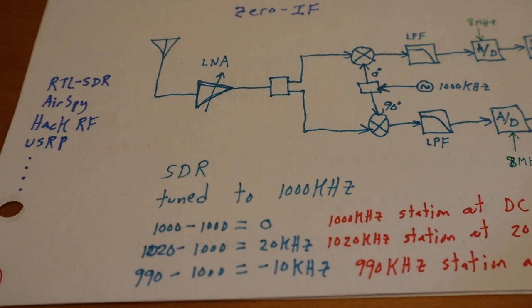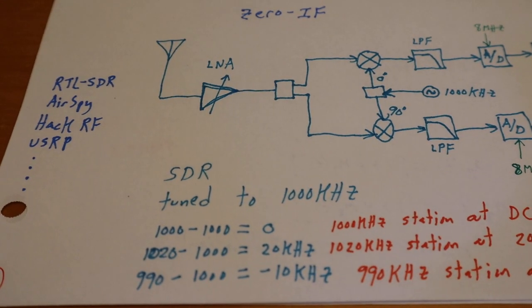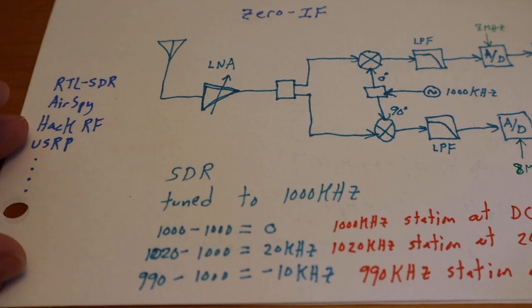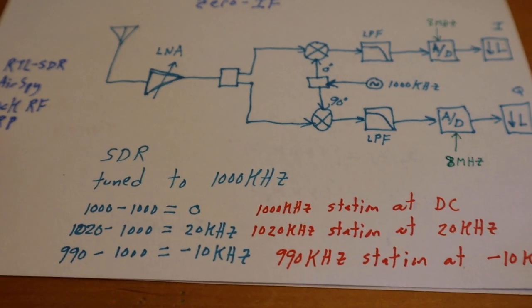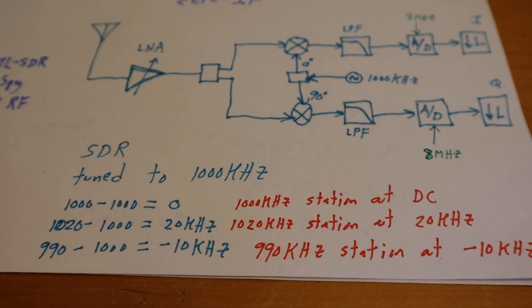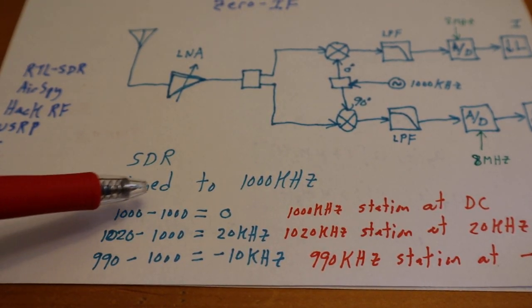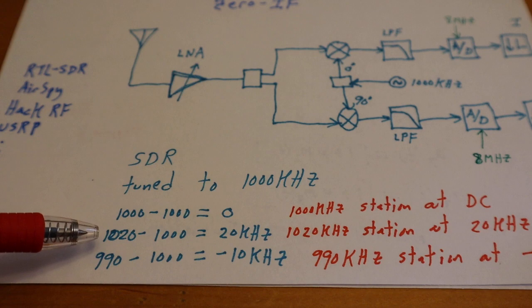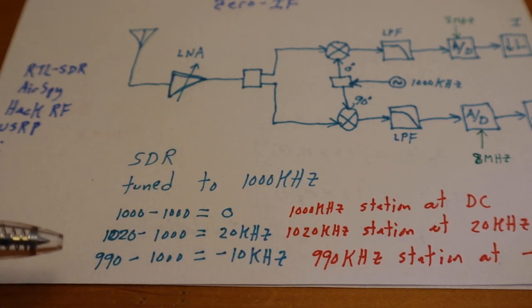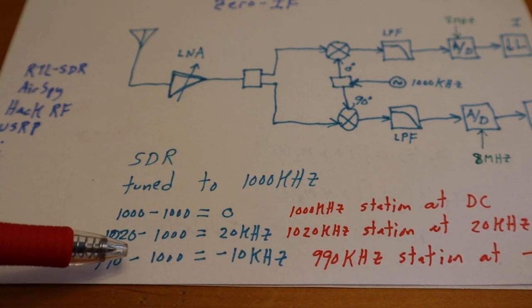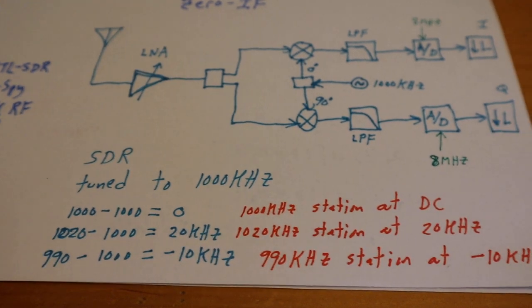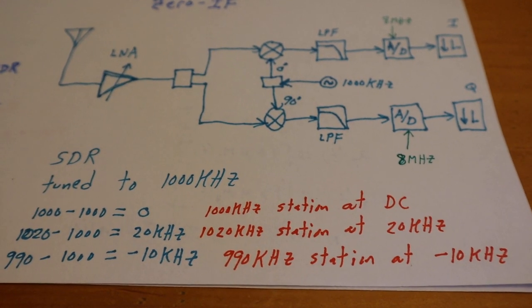Let's get into how I got those frequencies. Like I said, we tuned our radio station to 1000 kilohertz, so the 1000 kilohertz station is going to be DC, the 1020 guy is going to be 20 kilohertz, and the 990 station is going to be minus 10 kilohertz.